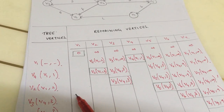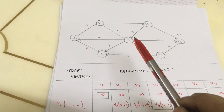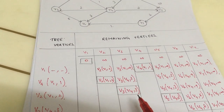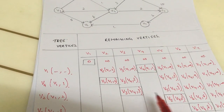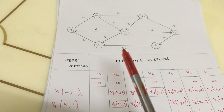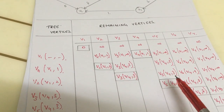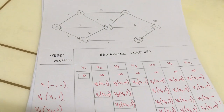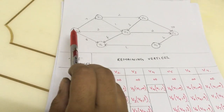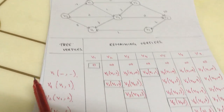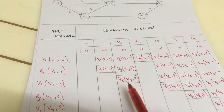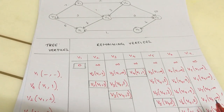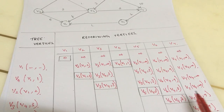From v3, we will see where the vertices are directed. To v5, from v3, there is no direction, so we will write the previous value. From v3 to v6, there is a cost of 5; we add the previous minimum value of 3 and write 8. For v7, there is no direction, therefore it is infinity.